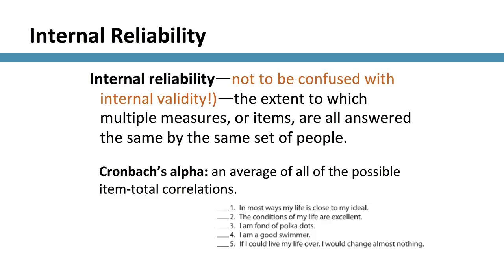Internal reliability: how similarly are people responding across different questions? With five questions, you compare question one with question two, question one with question three, and so on — all pairwise comparisons, each yielding a correlation. Cronbach's alpha, which you'll typically see reported, is an average of all those possible pairwise comparisons or item-total correlations. It's essentially the same as a correlation, so interpret it through that lens. Understanding this will serve you well in this course and in your undergraduate statistics course.